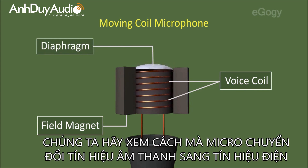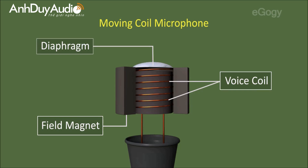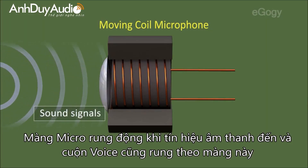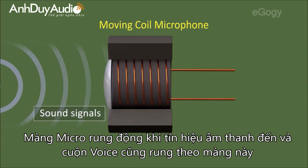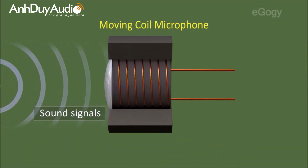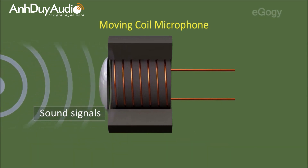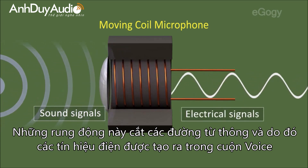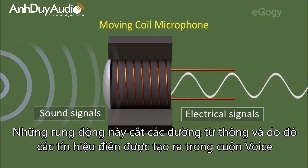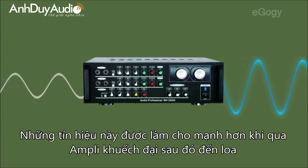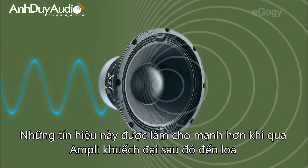Let's see how the microphone converts sound signals into electrical signals. The diaphragm vibrates when sound signals are incident on it, and the Voice Coil also vibrates in accordance with the diaphragm. These vibrations cut the flux lines, and thus electrical signals are induced in the Voice Coil. These signals are then strengthened by using an amplifier and sent to a loudspeaker.